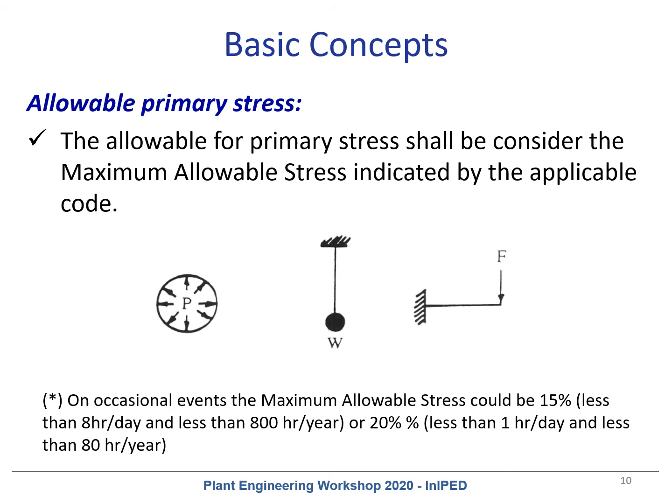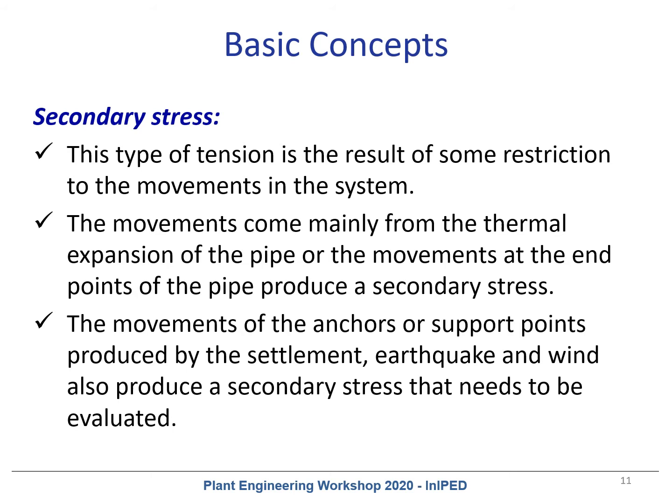What is the allowance for primary stress? The allowance for primary stress should be the maximum allowable stress indicated by the code for the operating temperature. Sometimes it is a mistake to mix the design temperature and the operational temperature. We need to check the stress at the relevant temperature for the force being analyzed.